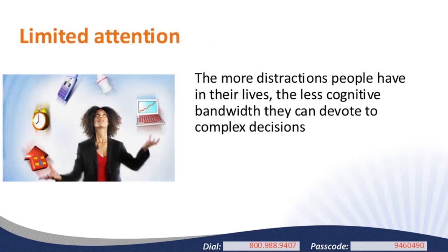The first inhibitor of careful decision-making is one many can probably relate to. Each additional ball we juggle in our lives—work, family, increasingly online activity—takes up some of our cognitive bandwidth. The more balls we're juggling, the less attention we have to devote to complex decisions, and the more likely we are to put them off or use a mental shortcut to reach a decision.